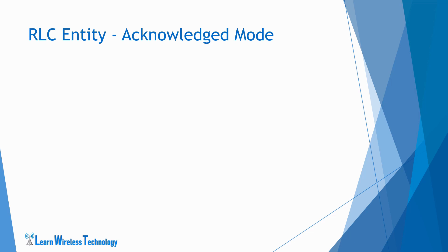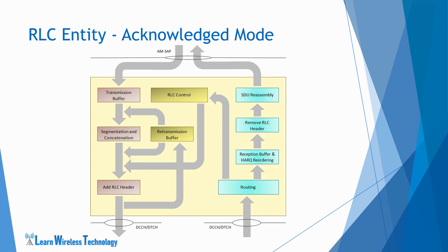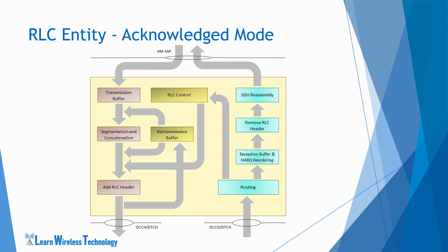Now, coming to the acknowledged mode RLC entity. The acknowledged mode RLC entity is configured to transmit or receive RLC PDUs through logical channels such as DTCH and DCCH in downlink and uplink. The acknowledged mode transfers data PDUs — referred to as AMD PDUs — and control PDUs referred to as status PDUs. At the transmitting side, the RLC SDUs in the transmission buffer received from the upper layer are segmented or concatenated so that the AMD PDU fits within the total size of the RLC PDU indicated by the lower layer. If the AMD PDU does not fit the RLC PDU size, it can be further resegmented, producing AMD PDU segments, and there is no limit on the number of resegmentations that can be done.